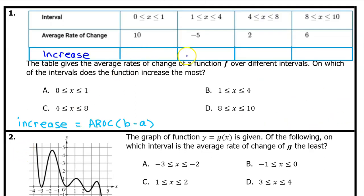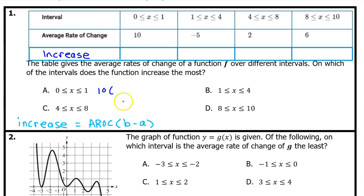Let's add another row onto this table to record the increase over each interval. The increase equals the average rate of change times b minus a — the width of the interval. For the interval from 0 to 1, the increase will be the average rate of change, which is 10, times 1 minus 0, so that's just 10.